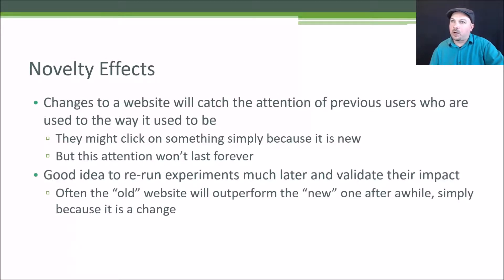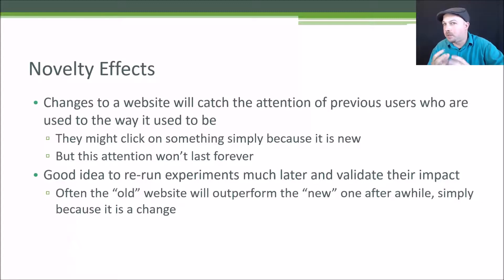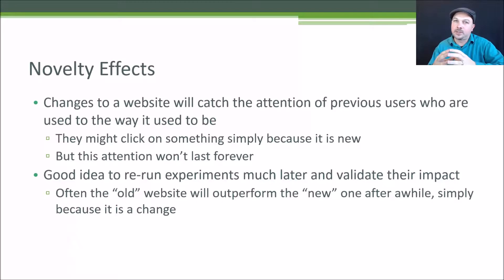One problem is novelty effects. The Achilles heel of an A/B test is the short time frame over which they tend to be run, and this causes a couple of problems. First of all, if there are longer-term effects to this change, you're not going to measure those.